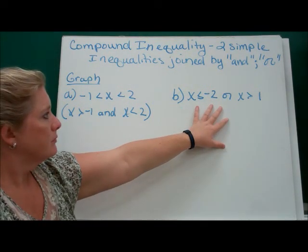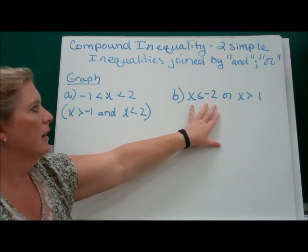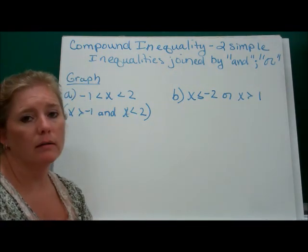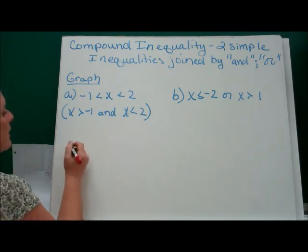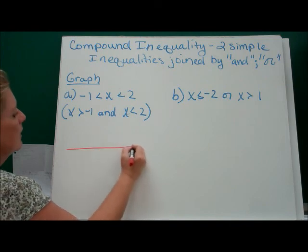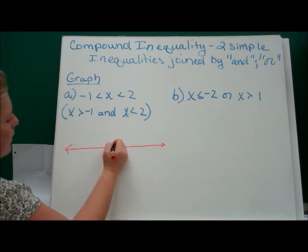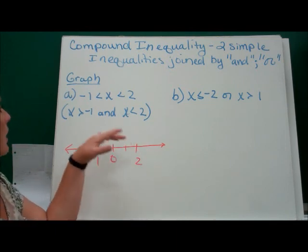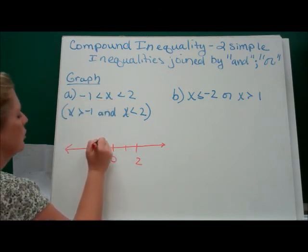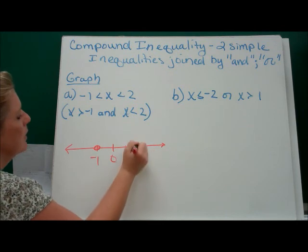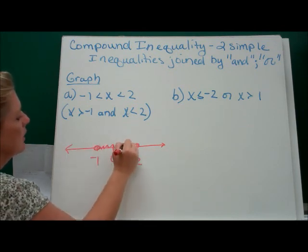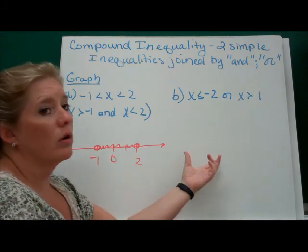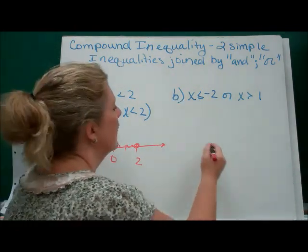With an 'or': x is either less than or equal to negative 2, or x is greater than 1. Now when we graph these, all 'and' inequalities will look like between two numbers shaded. With every single 'or,' it's going to be on the opposite side of two numbers — shaded outward from each boundary.